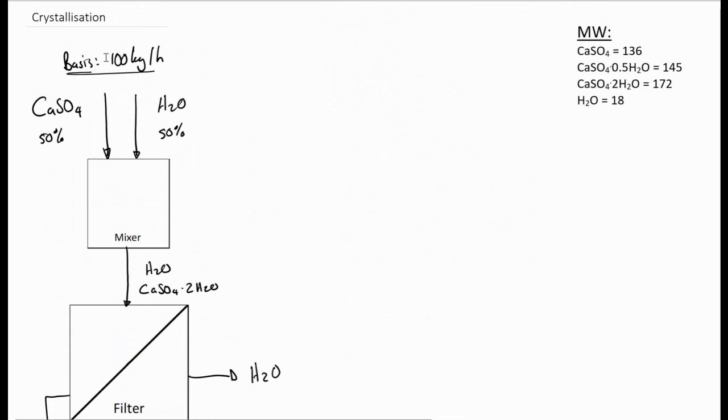So in this given system, there's 100 kilograms per hour of calcium sulfate, anhydrous and water being fed to the system in a 50-50% ratio. This means that we have 50 kilograms per hour of calcium sulfate and 50 kilograms per hour of water entering the mixer. Exiting the mixer, we have a mixture of water and calcium sulfate dihydrate.